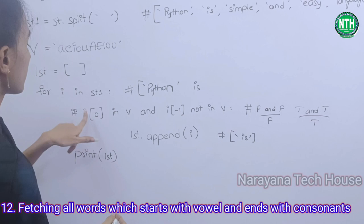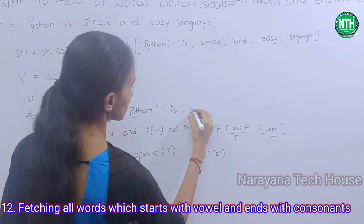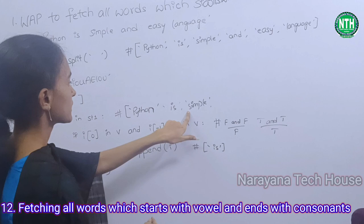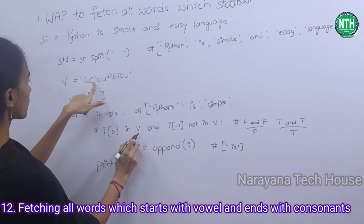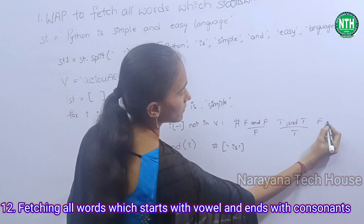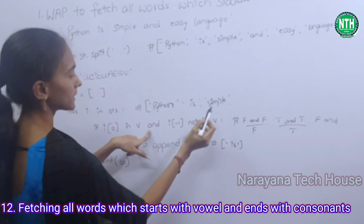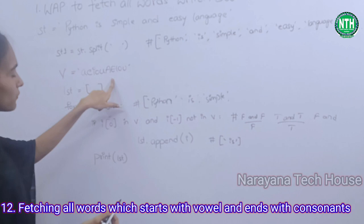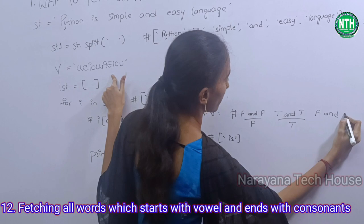Next, i value is 'simple'. i[0] = 's' — is 's' in V? False. And i[-1] = 'e' — 'e' not in V? False. So false and true becomes false only — not appending.